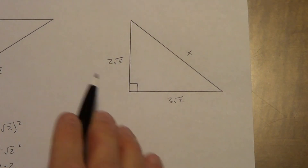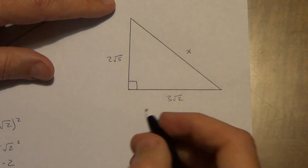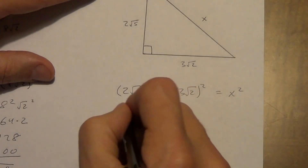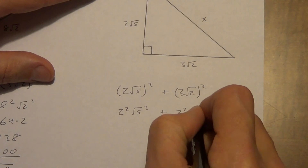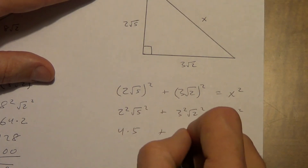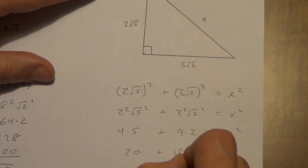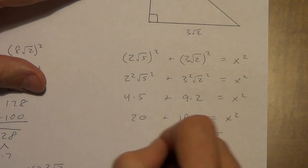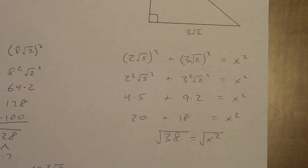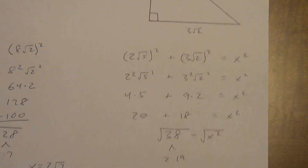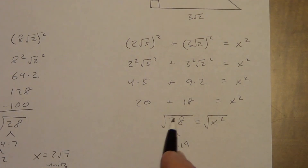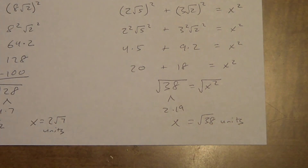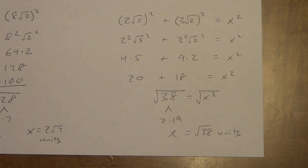One more example — this one has roots in both legs, just a little more work. (2 root 5)² + (3 root 2)² equals X². So: 2 squared times root 5 squared, plus 3 squared times root 2 squared, equals X squared. That's 4 times 5 plus 9 times 2: 20 plus 18 equals X squared, so 38 equals X squared. Square root of both sides — square root of 38 is about 6.1 or 6.2, and we don't want a decimal. Factor tree: 2 times 19 — 19 doesn't break down further, no pairs, nothing comes out, everything stays inside. X equals root 38 units. So that's the Pythagorean Theorem put to use, and we'll be doing this throughout Chapter 7.